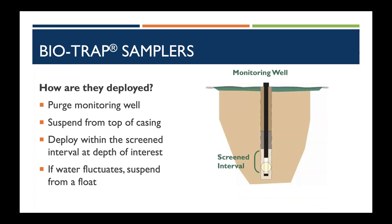The way it works: just like collecting a microbial or chemical sample, you purge the monitoring well, then suspend the BioTrap from the top of your casing by a line down into the monitoring well — make sure you suspend it from the top, we've had instances where they've been dropped. We leave them in for 30 to 90 days depending on the questions we're trying to answer, then pull them back up and send them to the laboratory for analysis. You want to deploy them at the depth you're interested in — down in the screened interval, not inside the NAPL, but either above or below it. If you have tidal influence or significant water fluctuation, we can suspend this with a float to keep it at a certain depth.